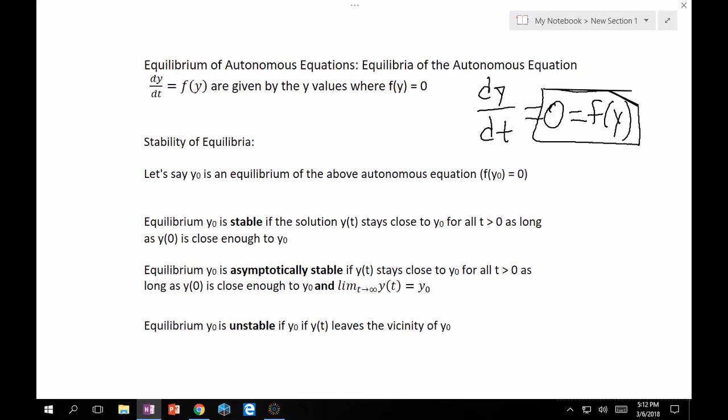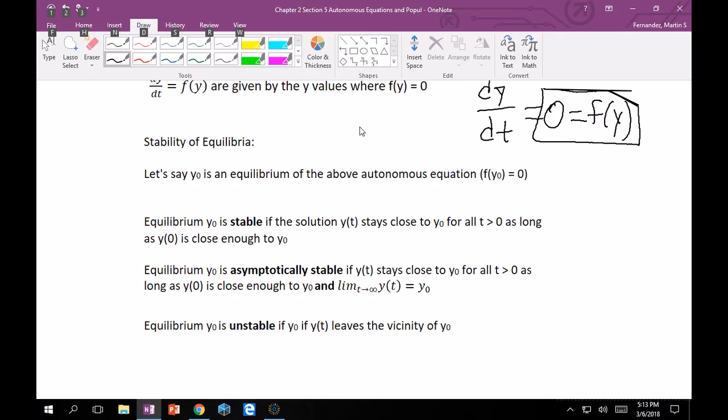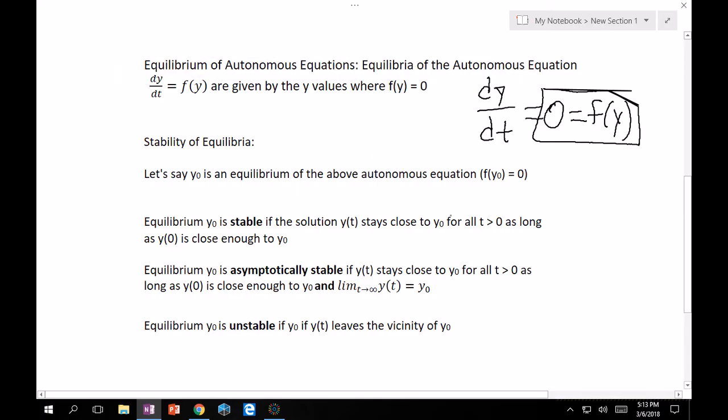Going off of that, now we move into stability. Let's say that y_0, so keep in mind, y_0 is just any number, any point value inside the y domain. And that is an equilibrium to this equation right here, dy/dt is equal to f(y). So in other words, f(y_0) is equal to 0. Now, there's three different types of stability for this class. The first one is stable. So if an equilibrium y_0 is stable, then the solution y(t) stays close to y_0 for all t greater than 0, as long as y(0) is close enough to y_0. So what this means is that essentially, if you have a solution and it's close to y_0, the equilibrium, then all solutions are around it for some reasonable amount of distance between that, are going to stay close enough to that point y_0. So that kind of makes sense of stable. If it stays there, it's going to be stably staying there.